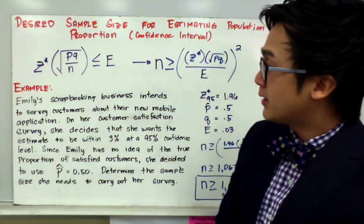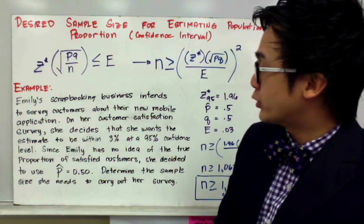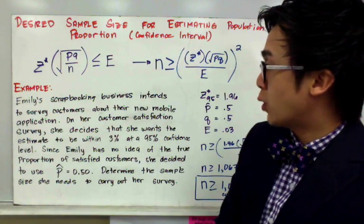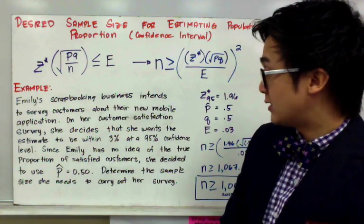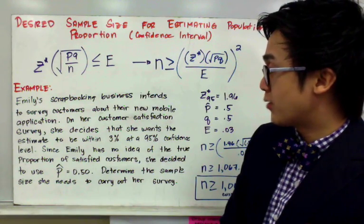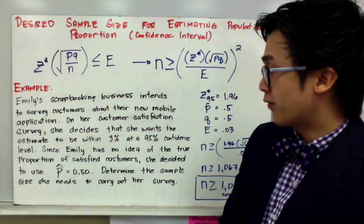Emily's scrapbooking business intends to survey customers about their new mobile application. On her customer satisfaction survey, she decides that she wants the estimate to be within 3% at a 95% confidence level.